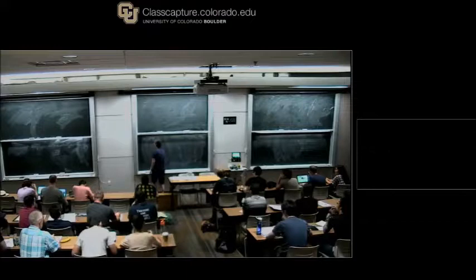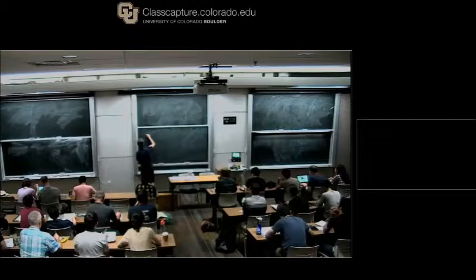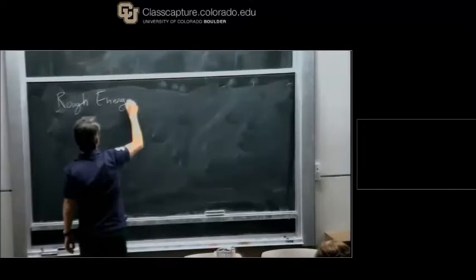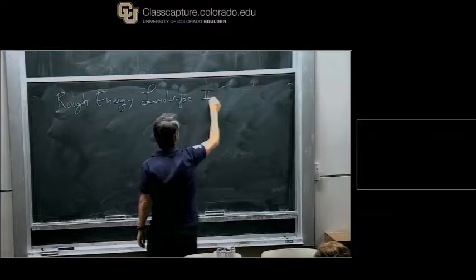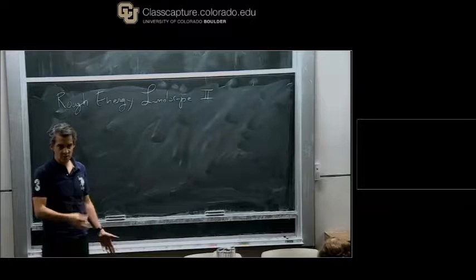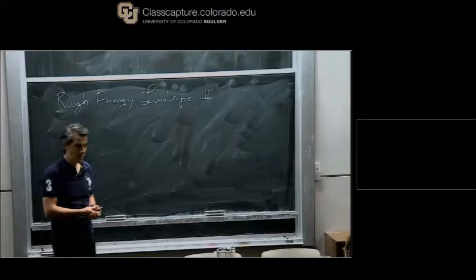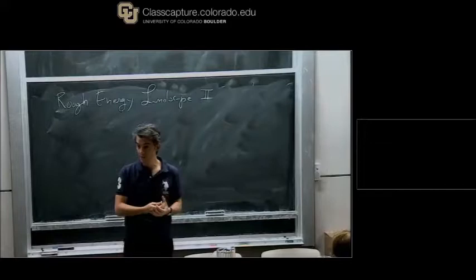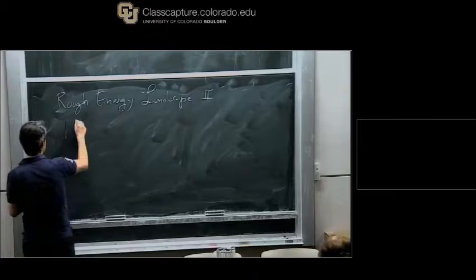Today is another lecture about rough energy landscape — we call it Rough Energy Landscape 2. What we are going to do is study another model. This model is actually very rich, and what we are going to get by studying its rough energy landscape are qualitative properties which are valid for many other systems. This is why we look at this model — it is the simplest in its class. The model is called the P-spin spherical model.